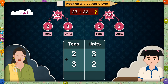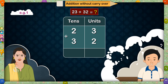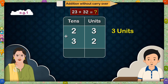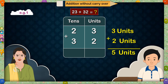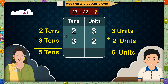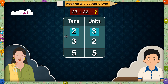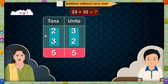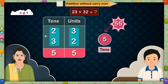Now who will do the addition? Madam, I will. 3 plus 2 units together make 5 units, and 2 plus 3 tens together make 5 tens. So 5 tens and 5 units — very good! This means 23 plus 32 together make 55. 55 means 5 tens and 5 units.